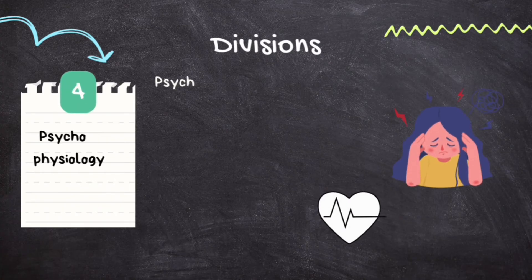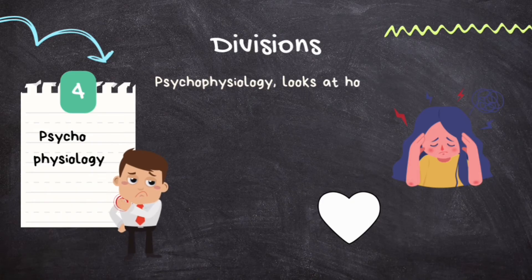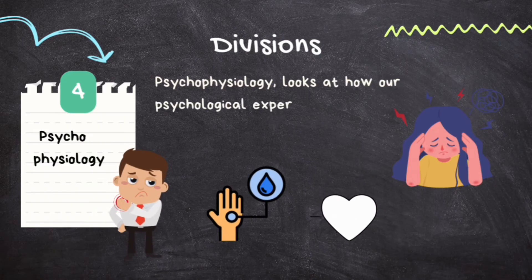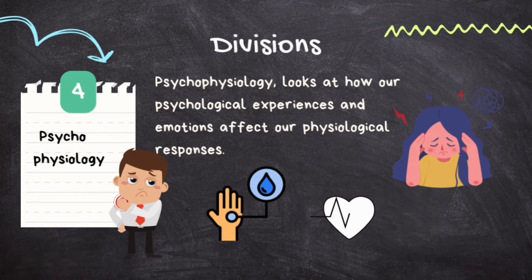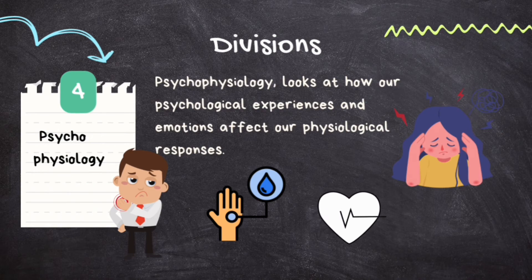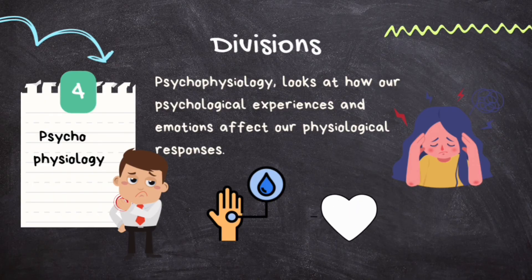The fourth division is psychophysiology. Psychophysiology looks at how our psychological experiences and emotions affect our physiological responses — studying how the mind influences the body. Psychophysiologists monitor bodily reactions such as heart rate, skin conductance, and muscle tension to understand how thoughts and emotions trigger physical changes. For example, they might measure how someone's heart rate increases when they are anxious, or how their palms become sweaty when they are stressed.